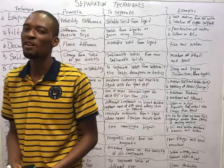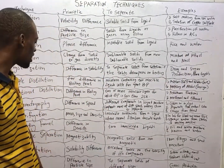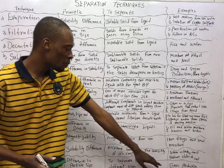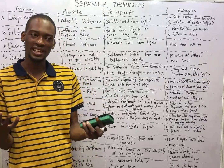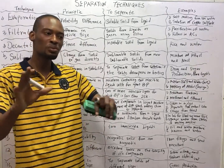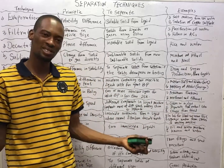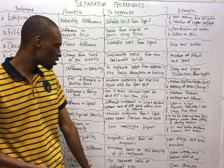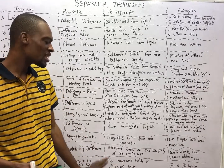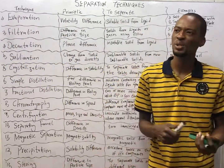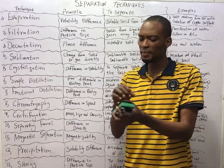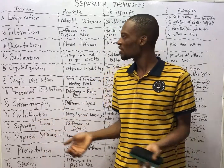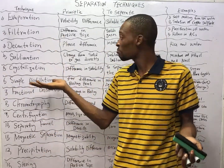Sieving, which is our final separation technique, is used when there is a difference in particle size. For example, in garlic production, you can see that particles are different in size, so you sieve to remove the finer particles and leave the rougher particles. Sieving is used to separate solids from solids of different sizes. Even with sand, you can see the particles differ in size, so you can sieve or filter to separate them.